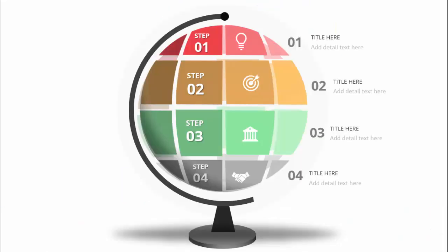In today's tutorial I am going to show you how to create four options with a globe design. Here you can see I have created this kind of an atlas or globe where I have put different colors. I put step one with the icon and you can add the step title and detail text, then step two, three, and four. I have also added some shadow effect at the bottom.